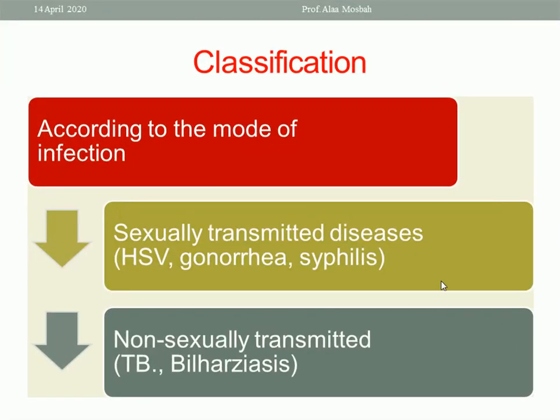Another classification is according to the mode of infection: either sexually transmitted diseases like herpes simplex, syphilis, or gonorrhea, or non-sexually transmitted diseases like TB or pediculosis.